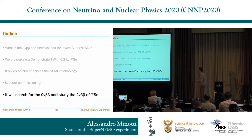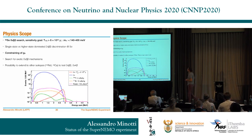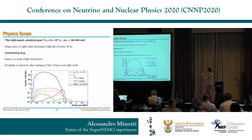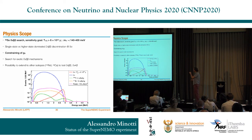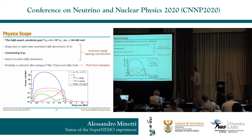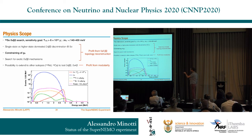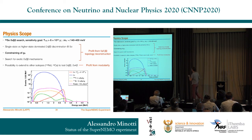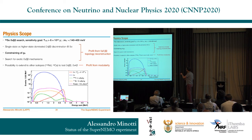The physics scope of SuperNEMO: the main goal is the search for neutrinoless double beta decay of selenium-82. The sensitivity goal is to reach 6×10²⁴ years for selenium, corresponding to a Majorana mass limit of 140 to 400 meV. Beyond that, we can discriminate event topologies — for example, distinguishing single-state versus higher-state dominance in the two-neutrino decay at beyond five sigma — work on constraining gA, and search for exotic mechanisms behind the neutrinoless double beta decay interaction. Thanks to the modular source, we can also open the detector, change the source, and study different isotopes such as neodymium or calcium, including neutrinoless quadruple beta decay.